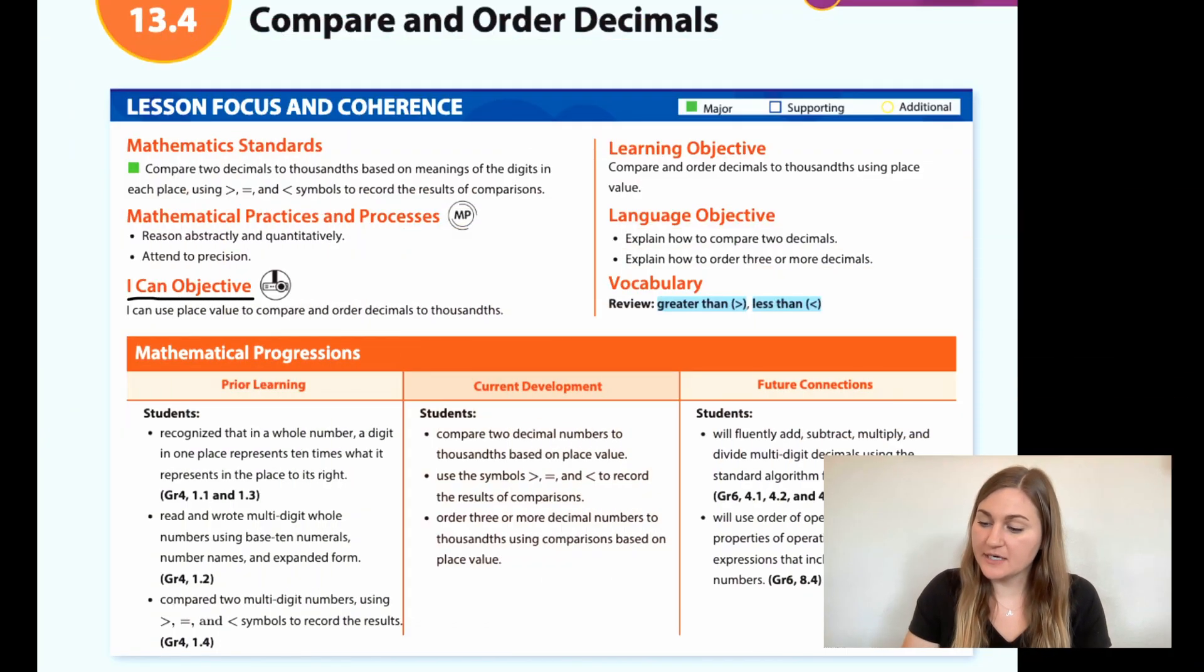I'm going to start off by going over the I can objective. It says I can use place value to compare and order decimals to thousandths. And the learning objective is to compare and order decimals to thousandths using place value.